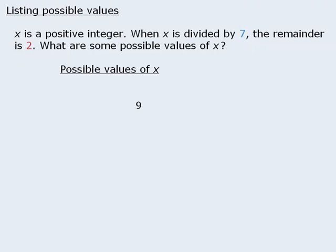Another possible number is 16. What are some other ones? For example, is there a number less than 9 that has remainder 2 when we divide it by 7? Yes. 2 satisfies this condition, because when we divide 2 by 7, we get 0 with remainder 2.